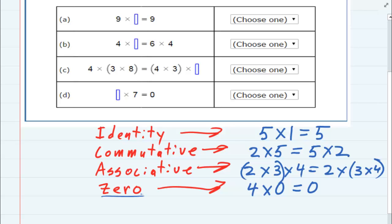Now, looking back up at the examples, the top one, we have nine times something equals nine. Well, the only thing that we can multiply nine by to get nine is one. So I would put my one in there, and that is our identity property.